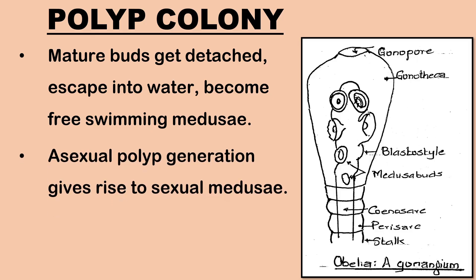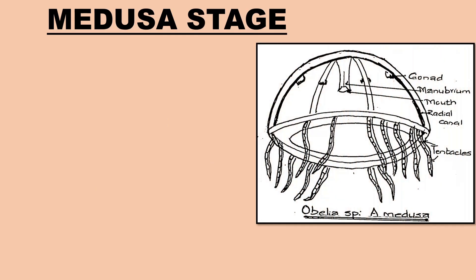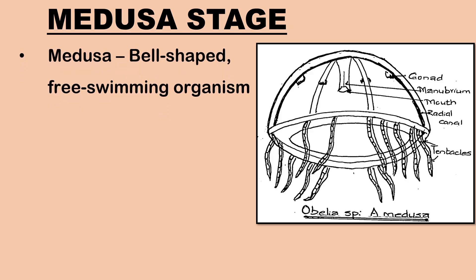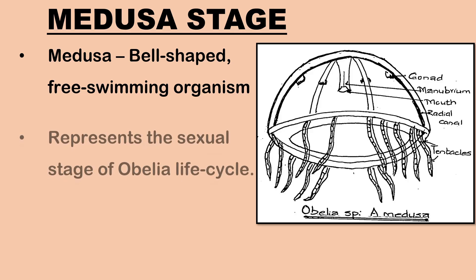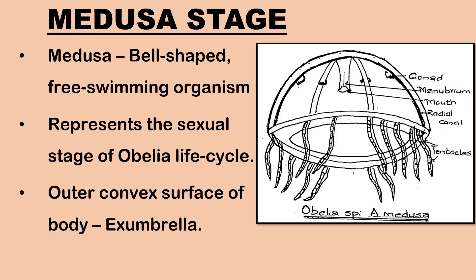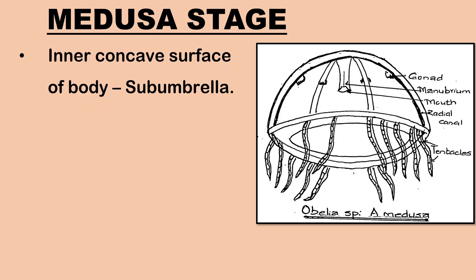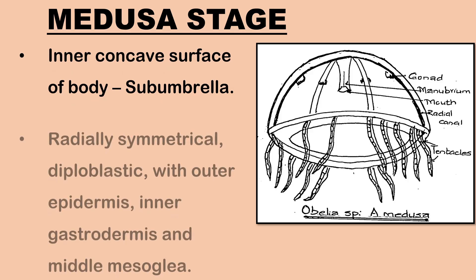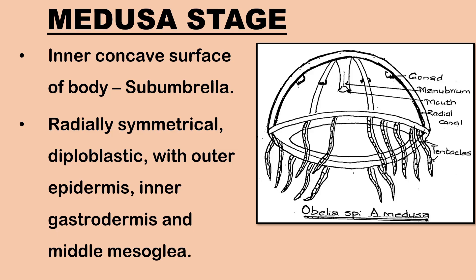Thus, the asexual polyp generation gives rise to the sexual medusae. The medusa is a tiny bell-shaped or umbrella-shaped free-swimming organism, representing the sexual stage of Obelia's life cycle. The body consists of a convex outer surface known as the ex-umbrella and a concave inner surface known as the sub-umbrella. The organism is radially symmetrical and diploblastic, with an outer epidermis and inner gastrodermis.